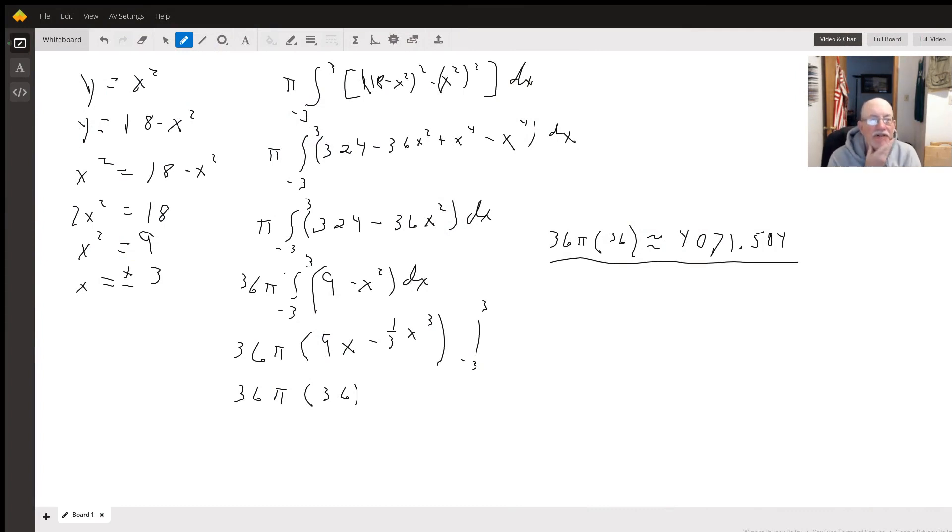All right, I think I did this one right this time. So we got y equals x squared and y equals 18 minus x squared.